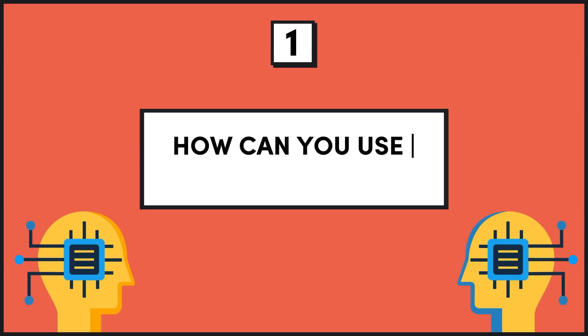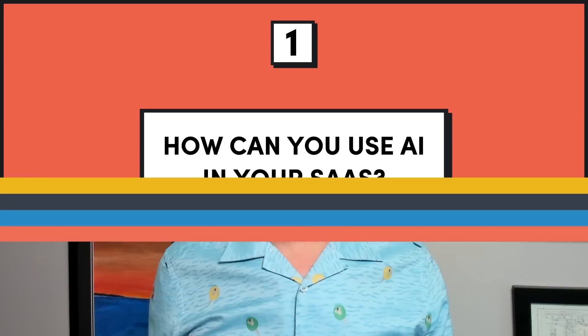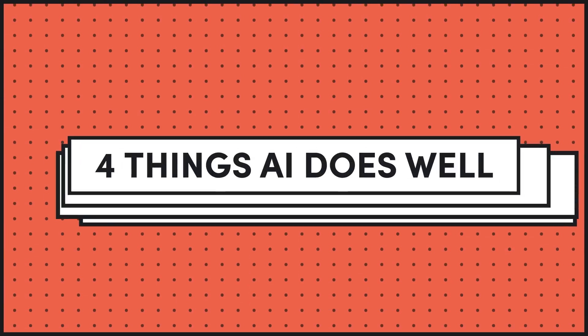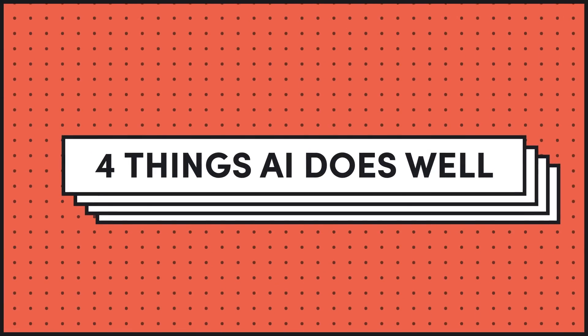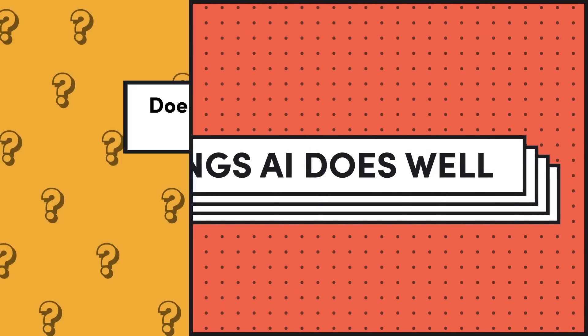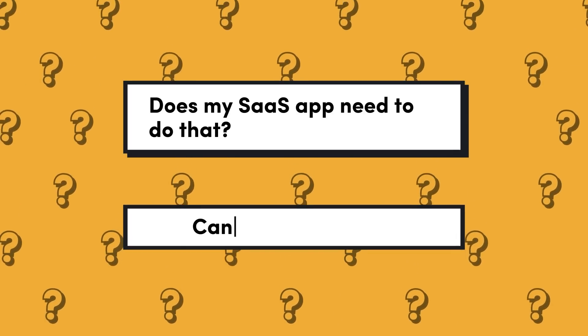The first thing I want you to think about with regards to AI is how it might be applied within your SaaS application as a feature or a way to level up your customers and make them more productive. I've come up with a framework — a taxonomy of sorts — of things that AI does well. I asked ChatGPT and Google to find an existing taxonomy and couldn't find one, so I came up with my own. There are four components: four things AI does well, and with each you'll want to ask yourself whether your SaaS app does or needs that, and whether you can use AI to do it.